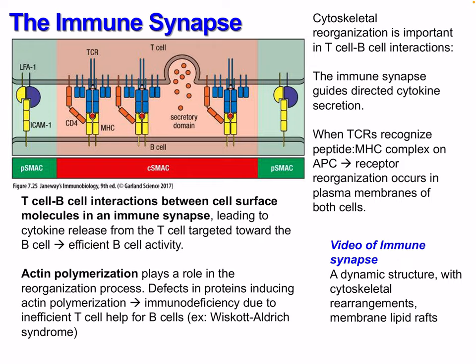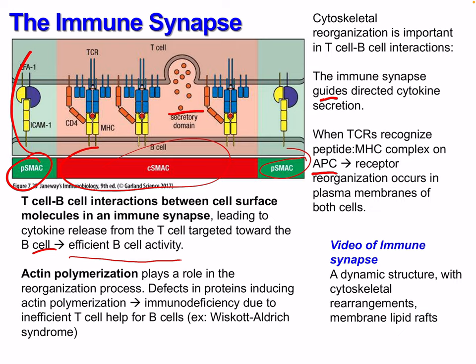In the immune synapse there is cytoskeletal reorganization, which is important in T cell-B cell interactions. The immune synapse guides directed cytokine secretion. When T cell receptors recognize the peptide-MHC complex on the antigenic cell, receptor reorganization occurs in the plasma membranes of both cells. T cell-B cell interactions between cell surface molecules in the immune synapse lead to cytokine release from the T cell targeted toward the B cell, resulting in more efficient B cell activity. Defects in proteins inducing actin polymerization can result in immune deficiency due to inefficient T cell help for B cells — this is known as Wiskott-Aldrich Syndrome.